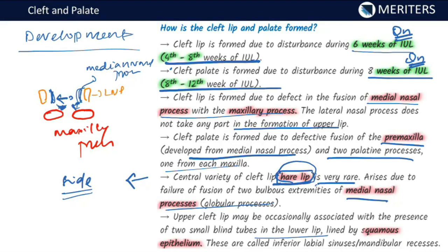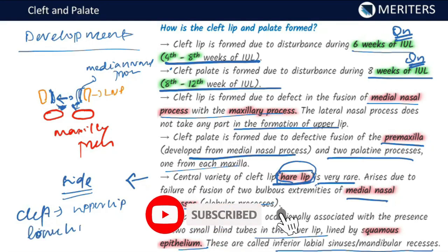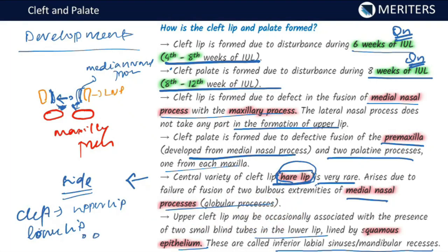The upper cleft lip may occasionally be associated with the presence of two small blind tubes in the lower lip, lined by squamous epithelium. These are called inferior labial sinuses or mandibular recesses. Clefting mainly occurs in the upper lip — it may be accompanied by some deformity in the lower lip, but does not cause clefting of the lower lip as such. These are very small, not through-and-through structures.